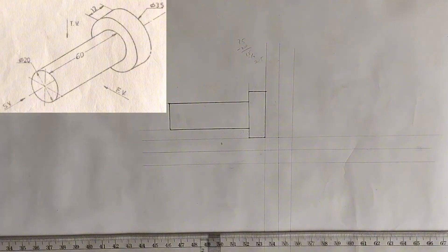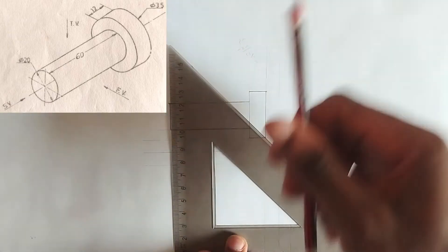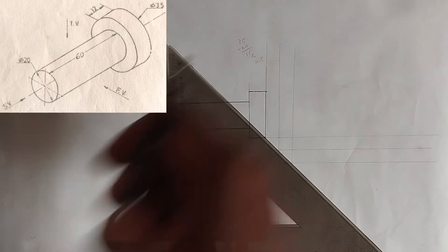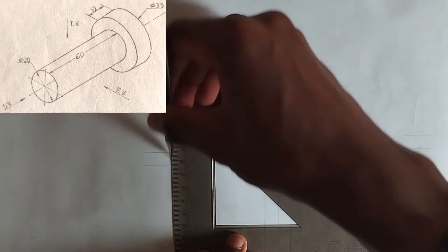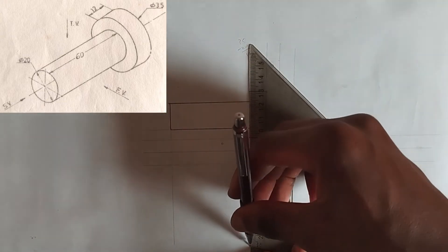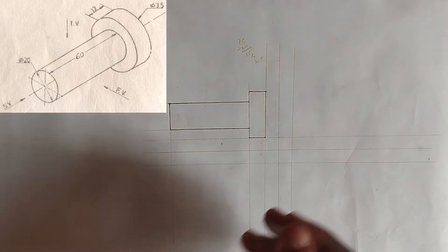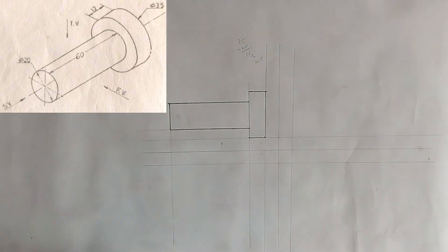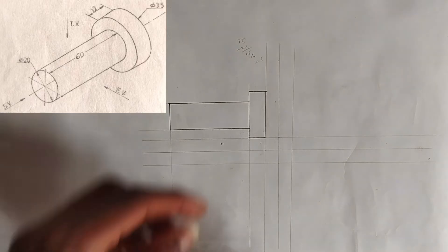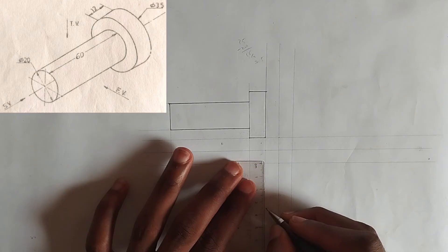We are going to be projecting our lines downward to draw our plan or top view. Whichever one you will call it, I'll call it the plan for the purpose of this video. So I'll project this place downward and I'll project this place downward. As we can see, the diagram above shows us that the plan and the front view are going to be exactly the same thing. Now I'll pick my 35mm here also, as we have done in the first one.